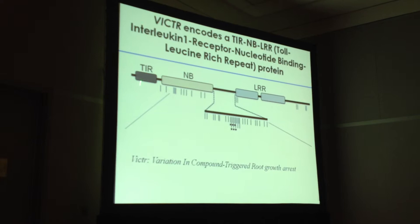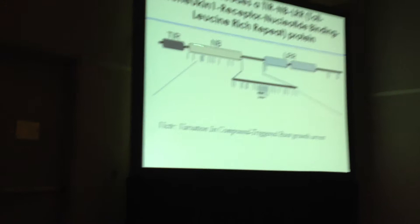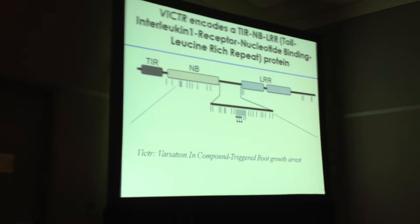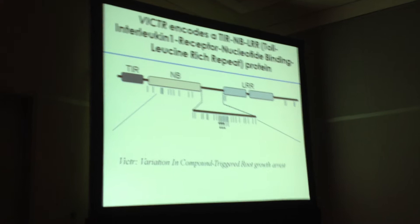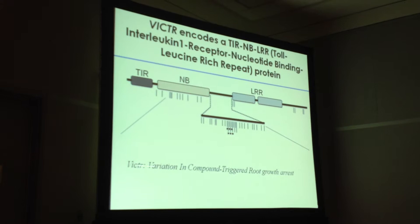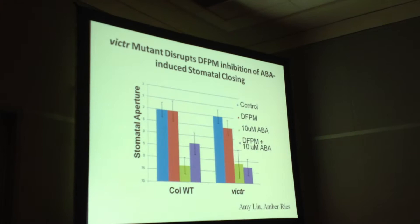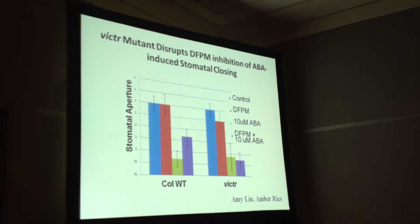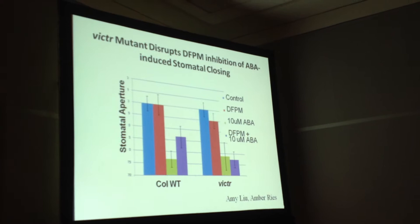Lo and behold, it's a previously uncharacterized toll-interleukin-receptor NLR-type protein. Comparing the structure across accessions insensitive to DFPM reveals polymorphisms. Expressing the Colombia gene in those insensitive accessions restores DFPM signaling, and knocking out this Victor gene can be complemented by the Colombia gene. We call it Victor — for variation in compound-triggered root growth arrest. In the Victor mutant, DFPM no longer inhibits ABA-induced stomatal closing, consistent with other pathogen signaling mutants.